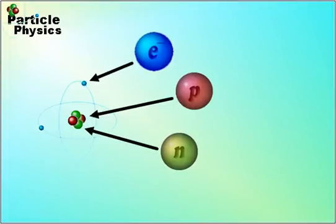For some considerable time it was thought that these three particles were fundamental. When we say fundamental, we mean that that particle is not made of anything smaller. But it turns out that the standard model tells us that only one of these particles is fundamental, and it's the electron. It's not made of anything else — it is part of the lepton group, and they are fundamental particles.